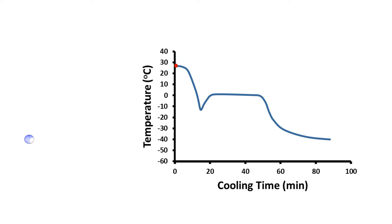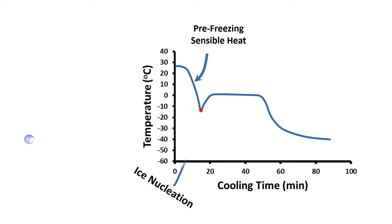Now I will go through the terminologies used in the cooling process. The first part of the cooling curve is pre-freezing, when sensible heat is removed to reduce the temperature. The second stage is ice nucleation, where ice formation is not at equilibrium — ice formation and melting can be observed and a critical mass of ice is not yet formed.